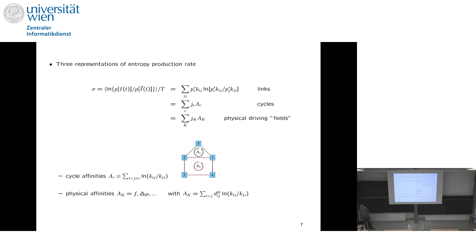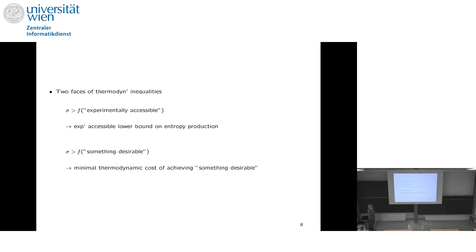If you have access to all quantities at any of these three levels, you get the full entropy production. The challenge is what to do when we don't have this information. I want to point out two perspectives on the inequalities I will show. First: if we get a lower bound in terms of experimentally accessible quantities, we get an accessible lower bound on entropy production rate sigma. Second: if the right-hand side is a function of something desirable, this tells us the minimal thermodynamic cost of achieving that desirable thing.